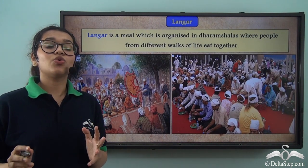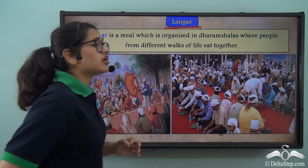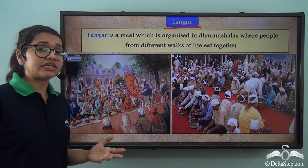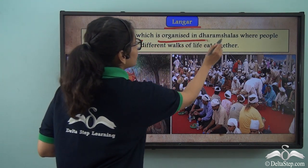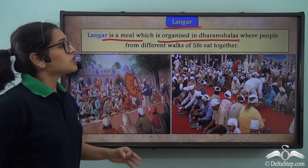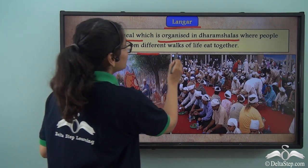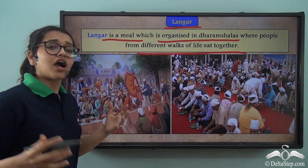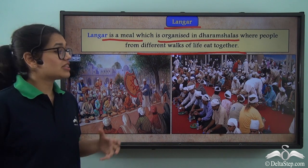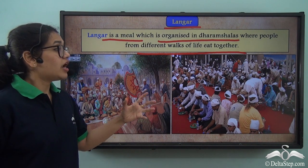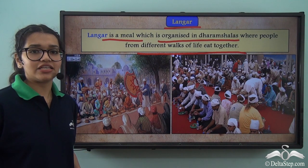That was exactly the story of how Langars began. Langar is a meal organized in Dharamshalas where people from different walks of life come together and eat together. This promotes equality as well, and it has been practiced since Guru Nanak's time and continues to this day.